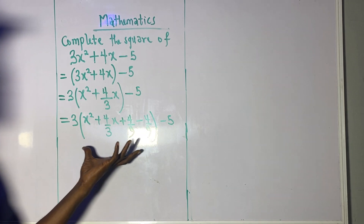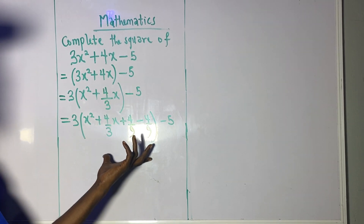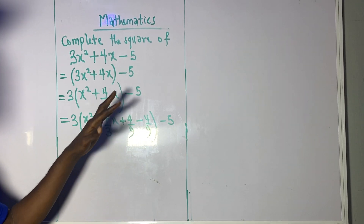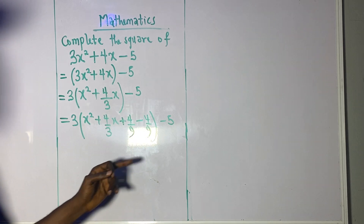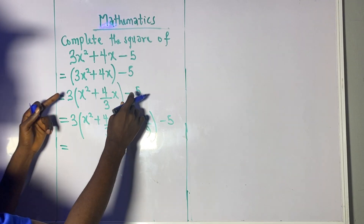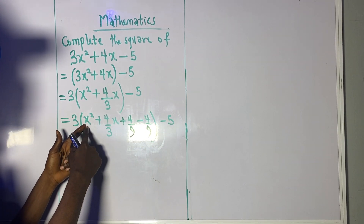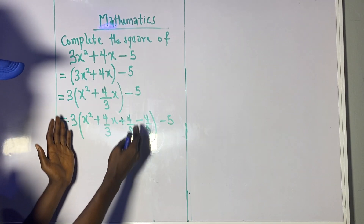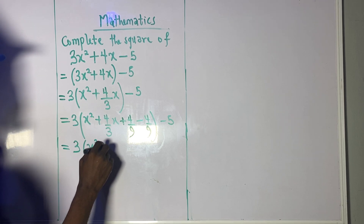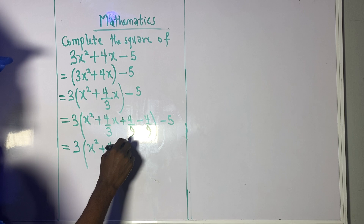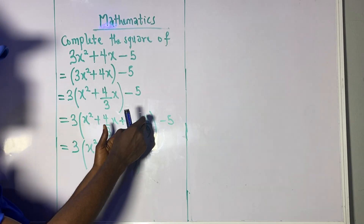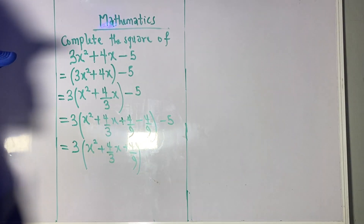We do this because at the end of the day the +4/9 and −4/9 cancel out — it is like rewriting, so nothing has changed. What we added, we have subtracted, so we have not changed the question. From here, we leave the expression from x² to +4/9 inside the brackets, because that gives us our complete perfect square: x² + 4/3 x + 4/9, which is in brackets.